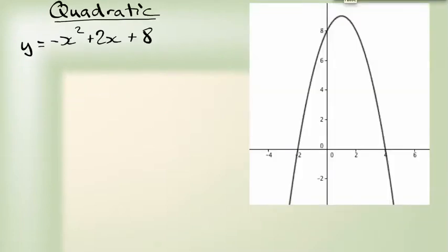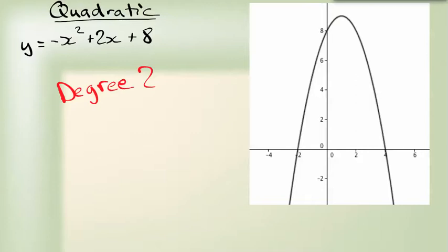As we get further into polynomial functions and into a higher degree, we start getting more complicated graphs. This is a quadratic function and it has a degree of 2 because the highest power on X is a square — a power of 2. It has one turning point: it was going up, now it's going down, or it could go down then have a turning point at the bottom, depending on the function.